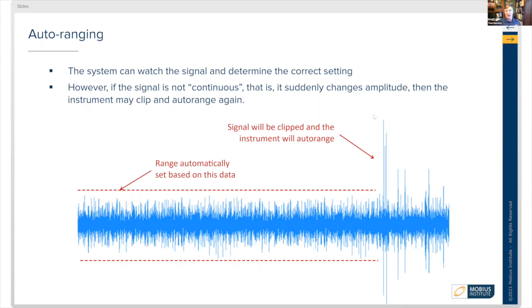On the left side through the middle of this time waveform, the range is automatically set based on the data being captured. But towards the end, there were big impacts or something that generated additional sound. That signal will be clipped and the instrument will auto-range again. You have to take good long data series to ensure the auto-ranging adjusts to any new peaks.